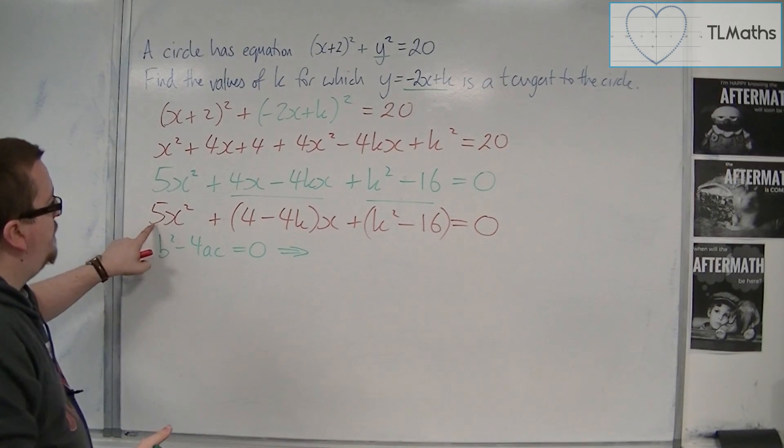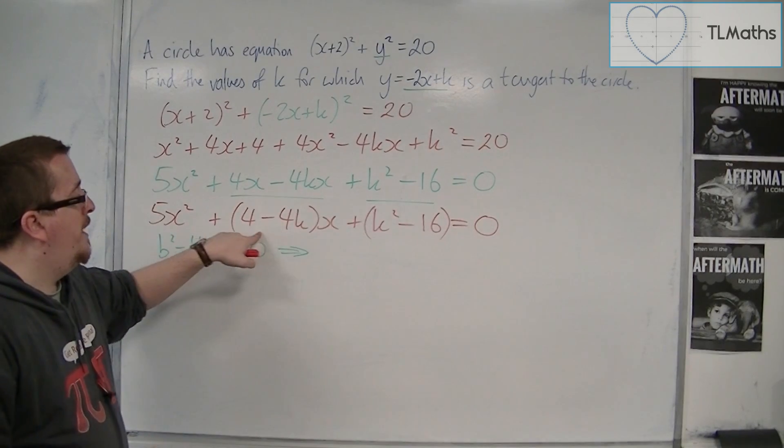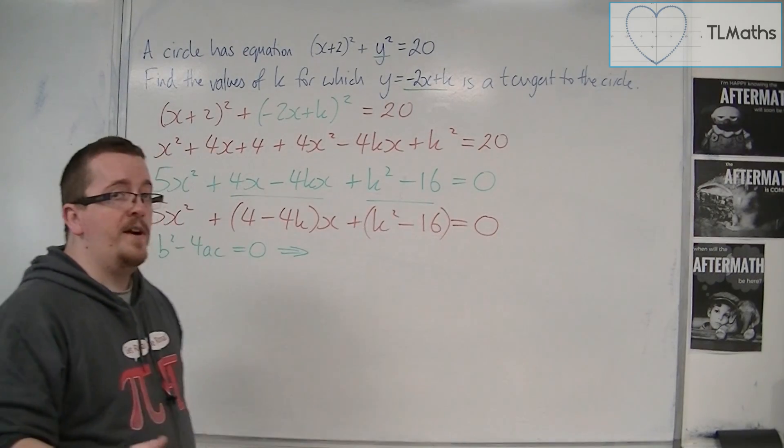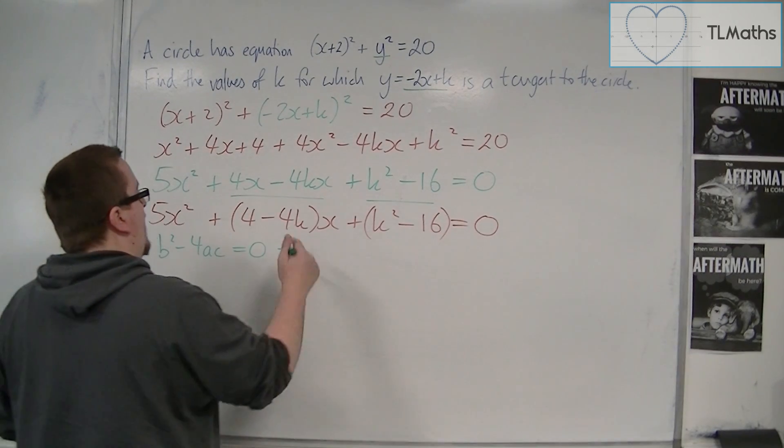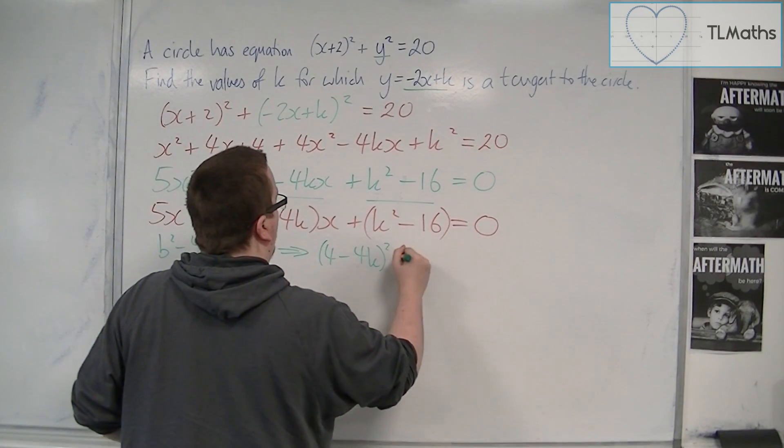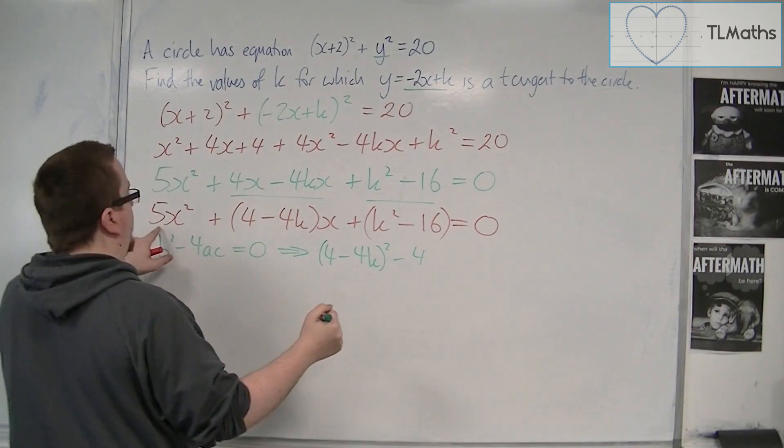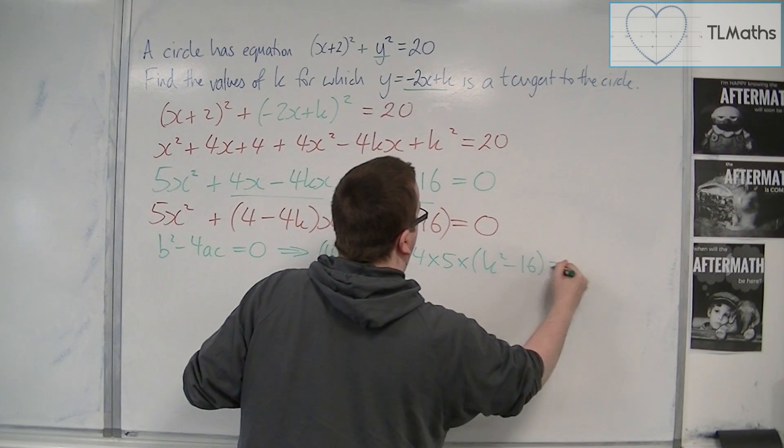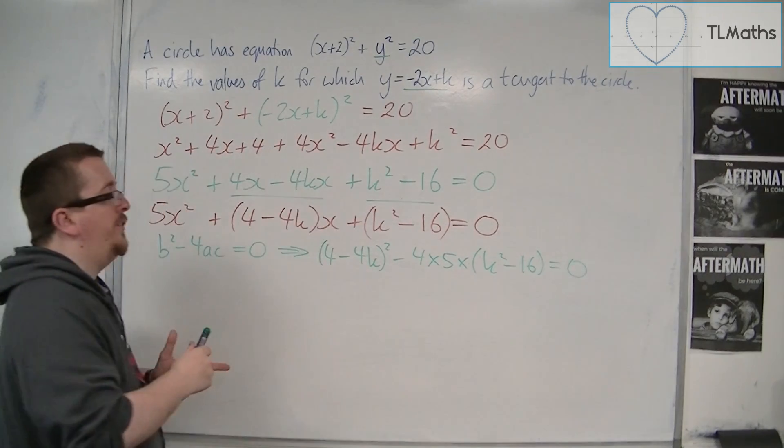Now, the a is 5, the b is (4 - 4k) - that whole bit there - and the c is the k² - 16. So we have b², so (4 - 4k)², take away 4 lots of 5 times (k² - 16). And that's going to be equal to 0.